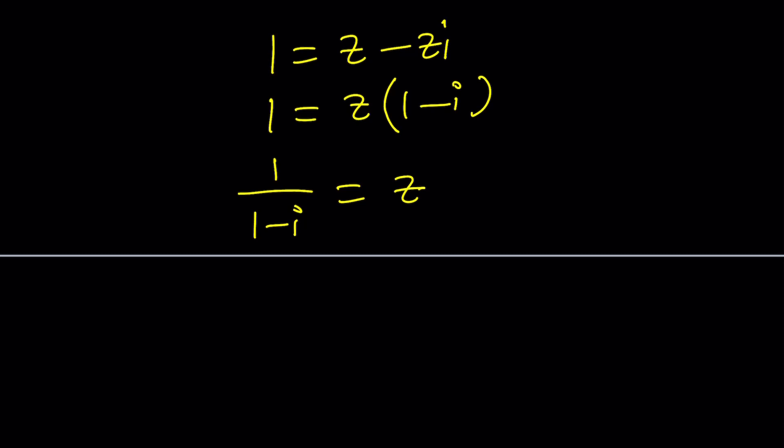And you'll get the answer. But let's go ahead and multiply by the conjugate to get rid of the expression at the bottom. And when you distribute, you're going to get 1 plus I divided by 2 again. This is going to be Z. And if you write it in standard form, you'll get the exact same thing. Of course, you should always get the same thing.